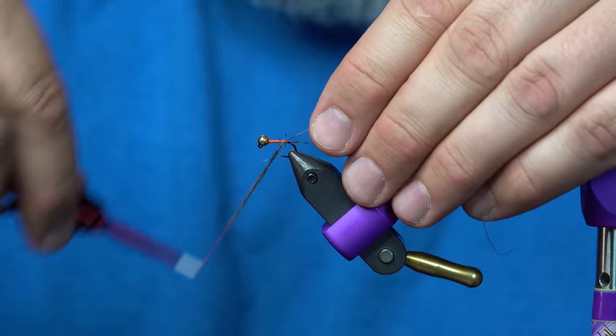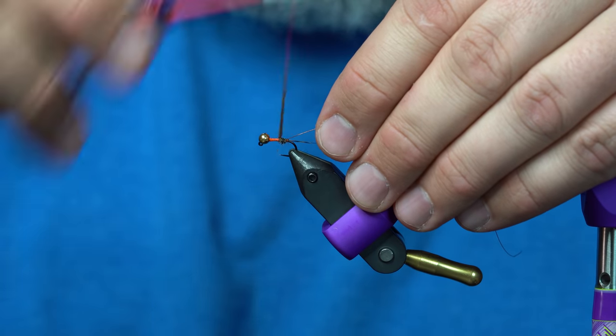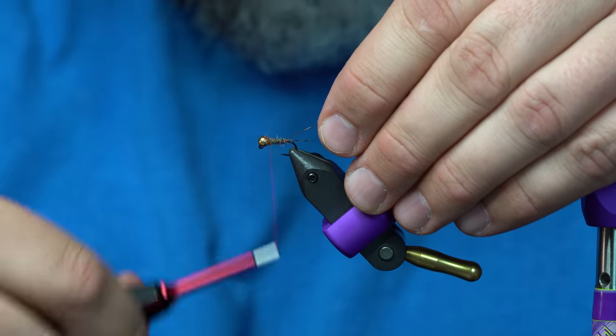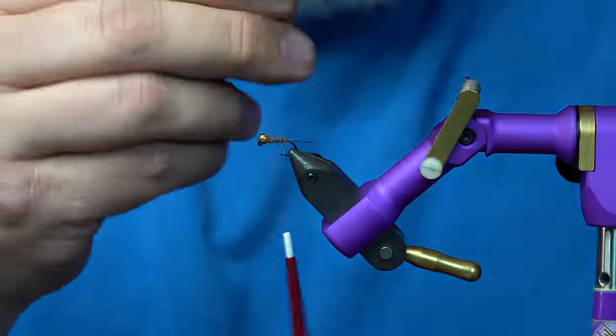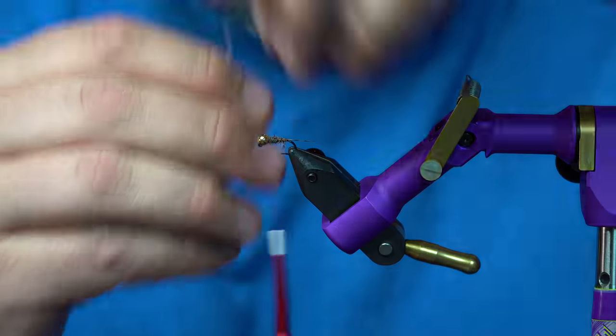Here we have a pretty buggy body already, counter ribbed with wire to kind of hold it in place.